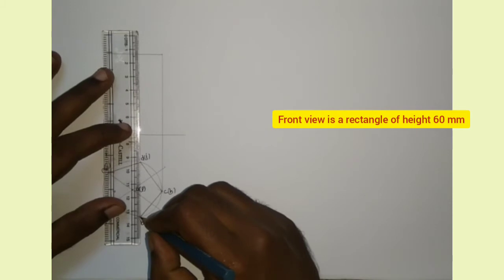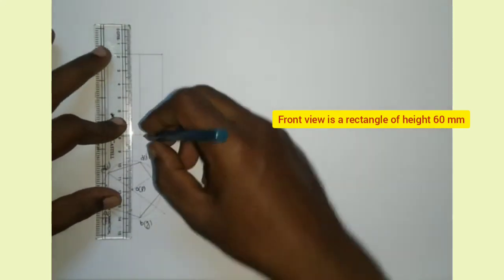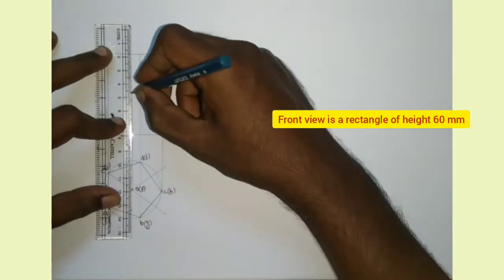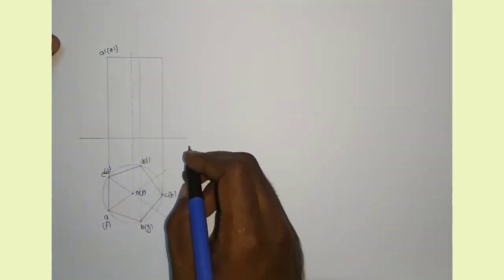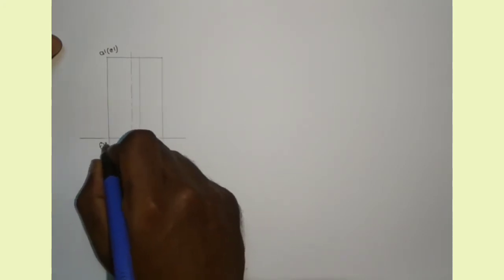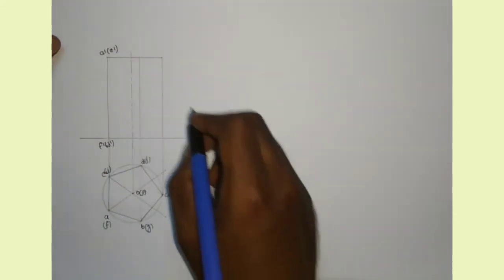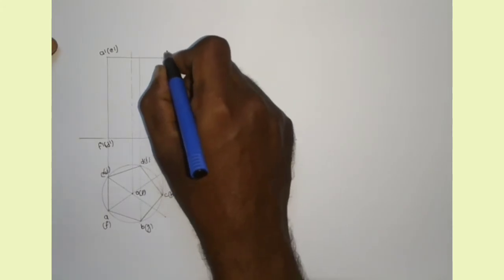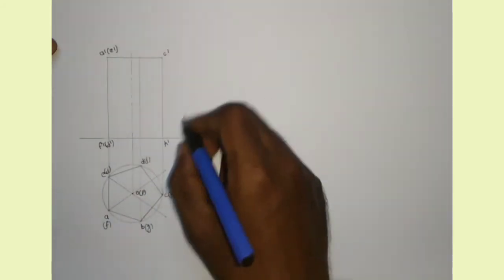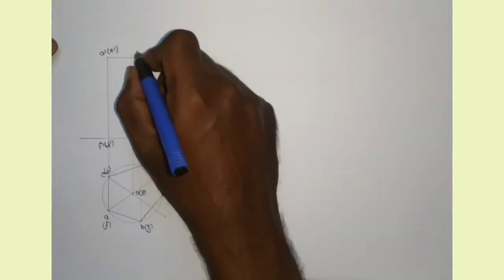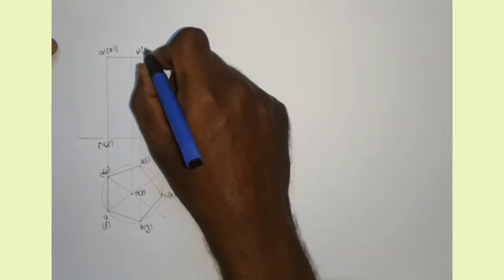We can see a lateral edge. Now I am drawing the axis, that is a chain thin line. On the front view we can see the lateral edge A', F', and on the back side there is another edge E', J' in brackets. And also we can see the edge C', H', and we can see the lateral edge B', G', and on the other side there is another lateral edge D', I' which is in brackets.